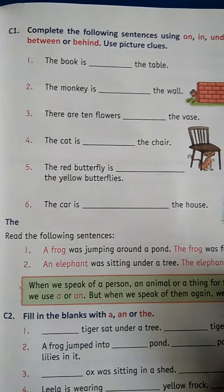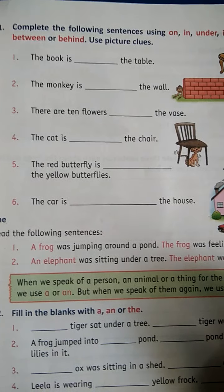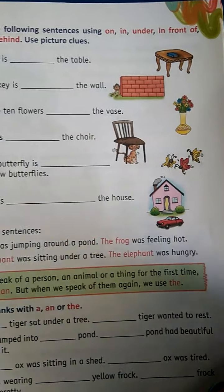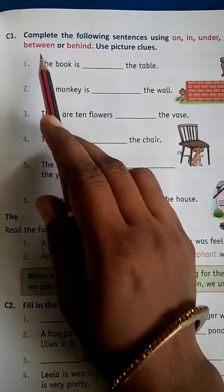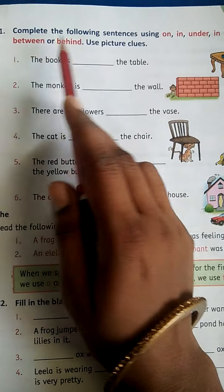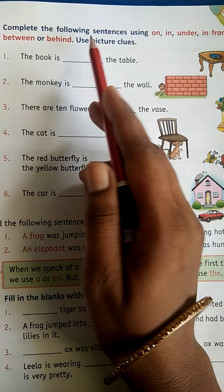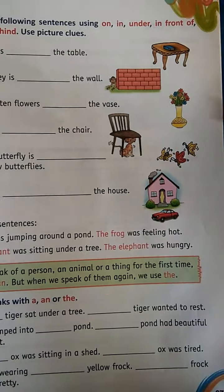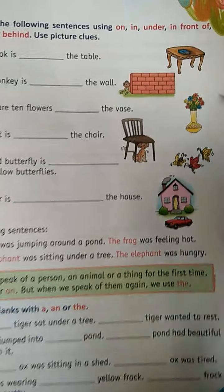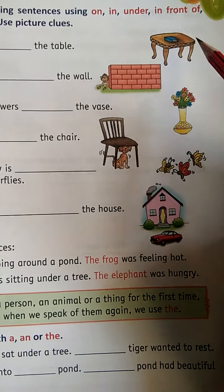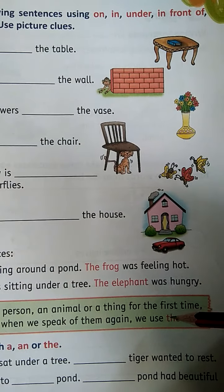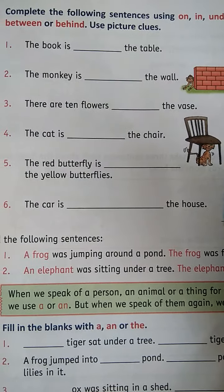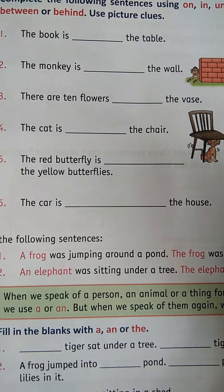Now come to the exercise on page number 67, C1. Complete the following sentences using: on, in, under, in front of, between, behind. Use picture clues. Picture clues aapko diye hue hain. Aap picture achhe se dekhenge aur yeh exercise fill karenge.